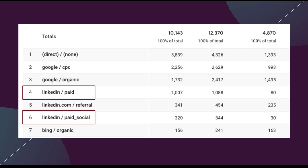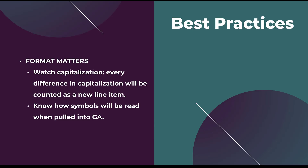Here's an example of that in an actual report: over the course of time, somebody changed the UTM medium for LinkedIn from 'paid' to 'paid social,' and now there are two separate line items even though that's the exact same set of campaigns. I have seen upwards of 10 different line items for this exact same set of campaigns because people just weren't consistent and didn't have a naming convention in place.